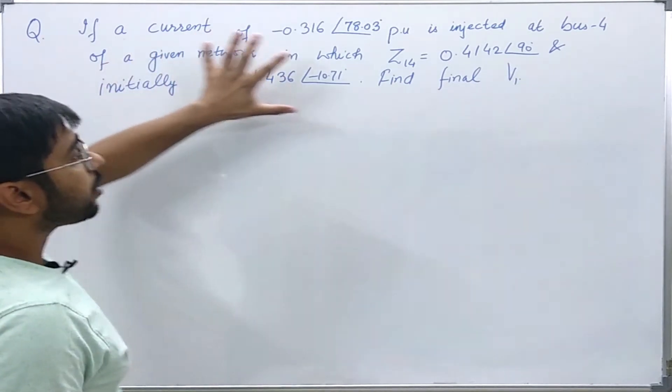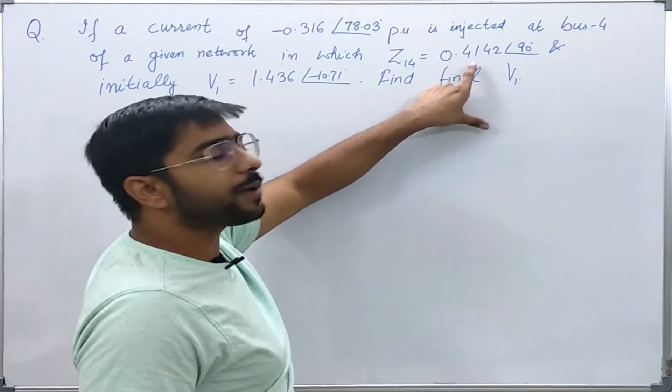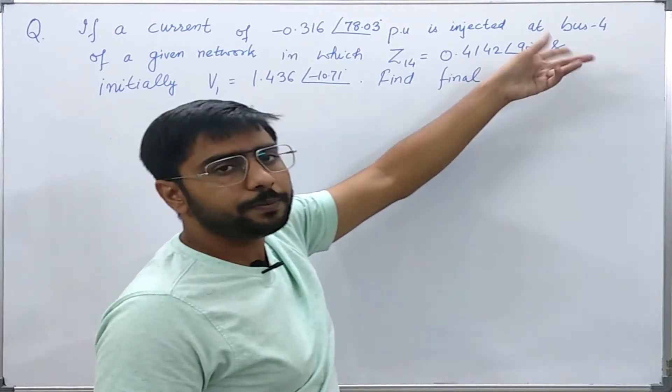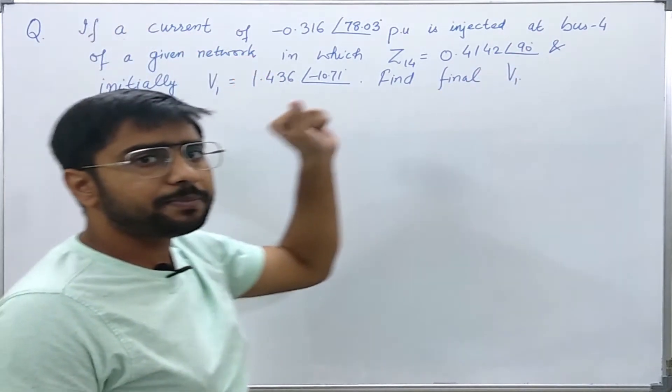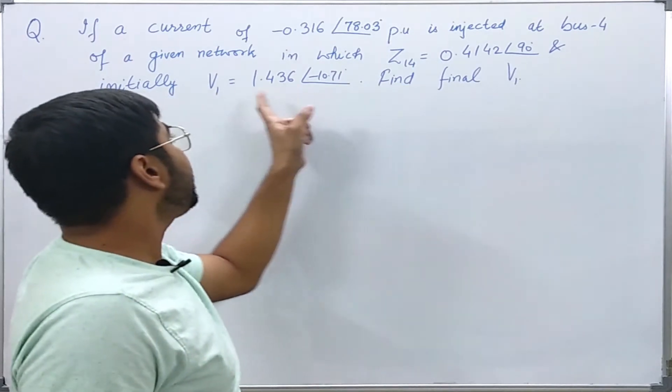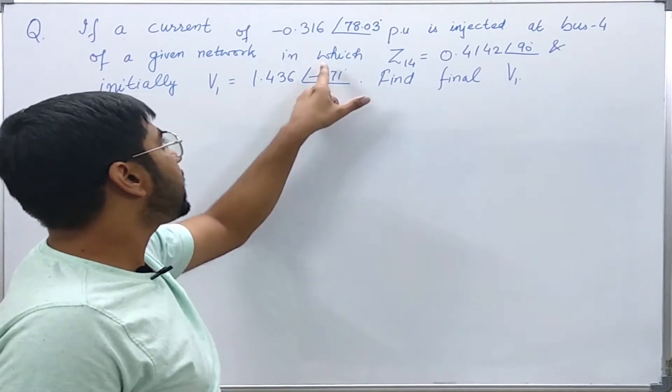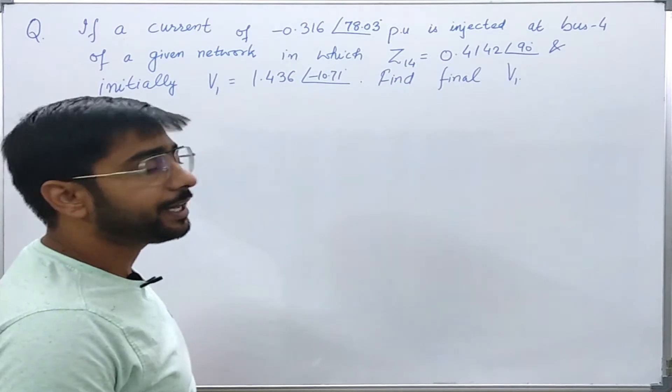We are also given that Z14 is 0.4142 angle 90 degrees per unit. Initially, the voltage at bus 1 was given to be 1.436 angle minus 10.71 degrees per unit.